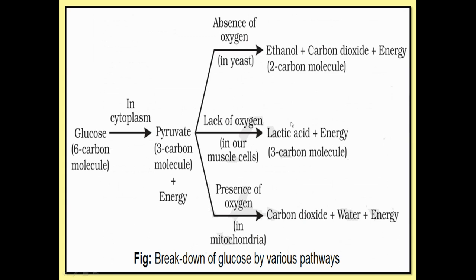Here is the summary of Respiration. In yeast, glucose is broken down into pyruvate or pyruvic acid in the cytoplasm — glucose has 6 carbon molecules while pyruvate has only 3. Energy is released in the form of ATP. In the absence of oxygen, as in yeast, ethanol and carbon dioxide are produced along with energy — ethanol is a 2-carbon molecule. In the absence of oxygen in muscles, lactic acid and energy are produced — lactic acid is a 3-carbon molecule. In mitochondria, in the presence of oxygen, pyruvic acid is converted into carbon dioxide, water, and energy.